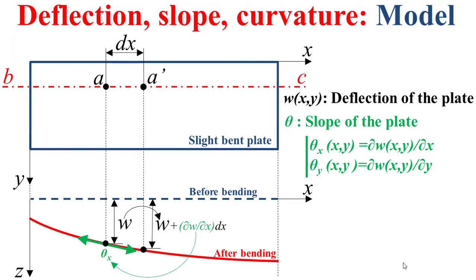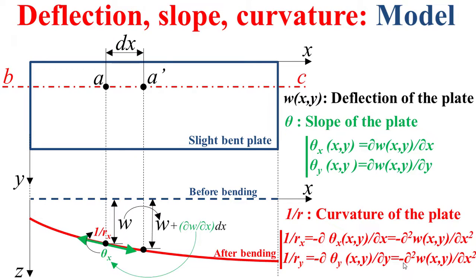And from this slope theta, we can determine the curvature of the plate — the curvature along x and the curvature along y — which are the rate of change of the slope along x and y respectively, with a minus sign.